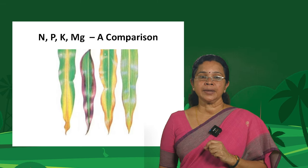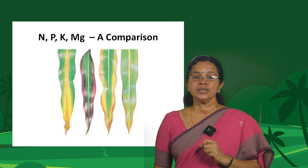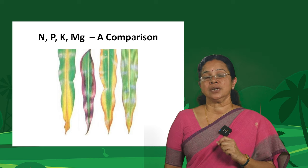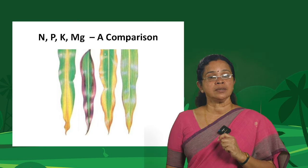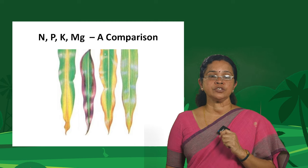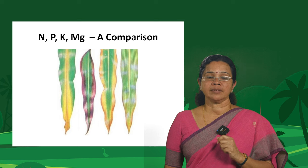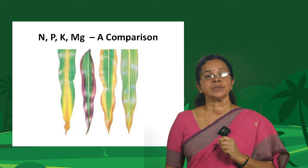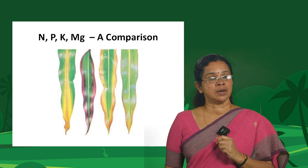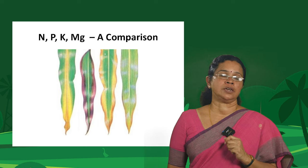Let us now compare the deficiencies of N, P, K and magnesium. In all these cases we have chlorosis, but the type differs. In the case of nitrogen, you see a V-shaped chlorotic band starting from the tip of the leaf. In the case of phosphorus, you see purplish coloration. In the case of potassium, it is marginal chlorosis. And in the case of magnesium, it is intervenal chlorosis. This helps you identify these four nutrient deficiencies.